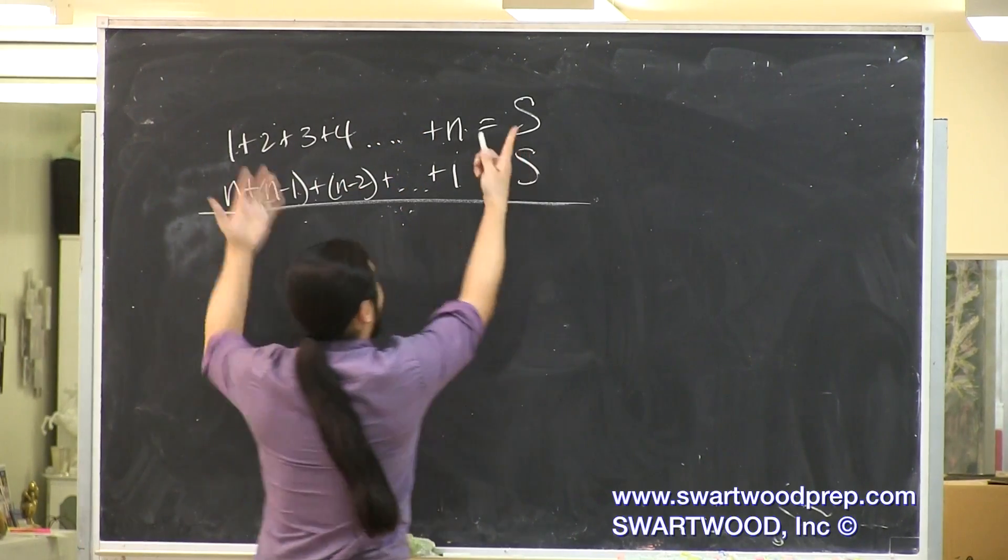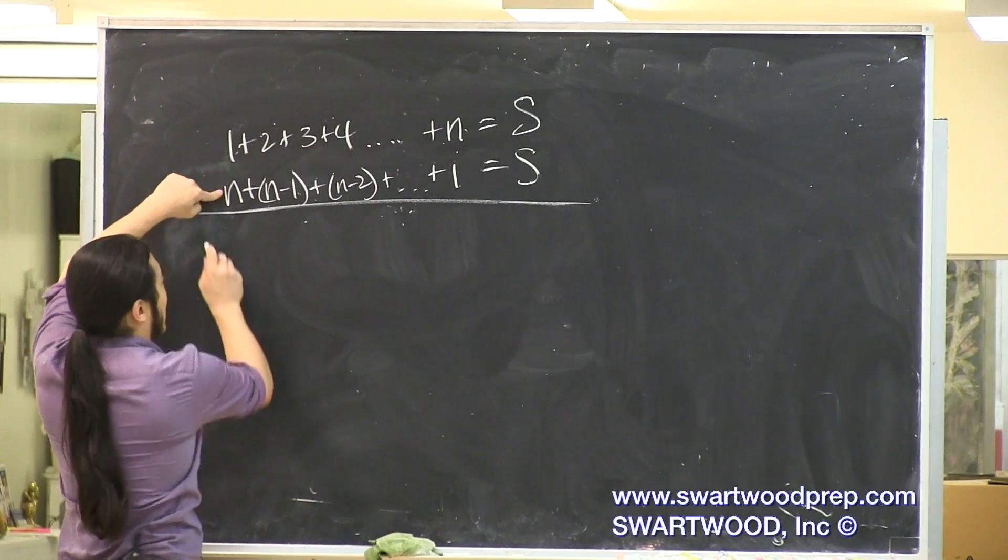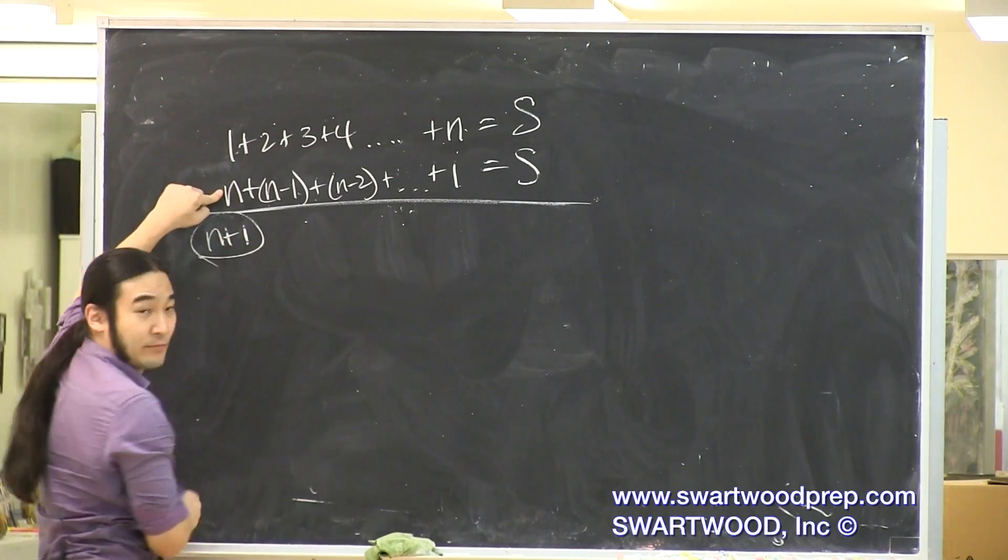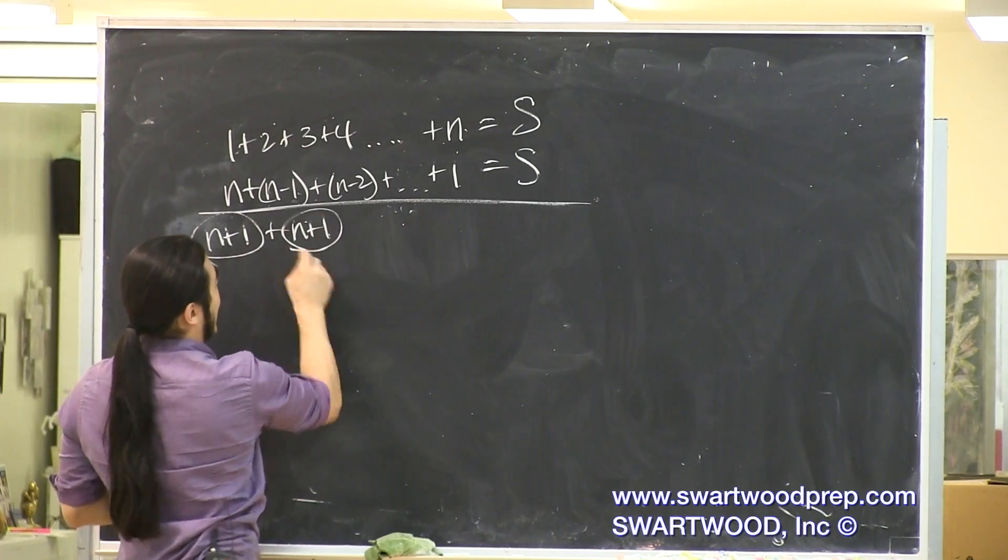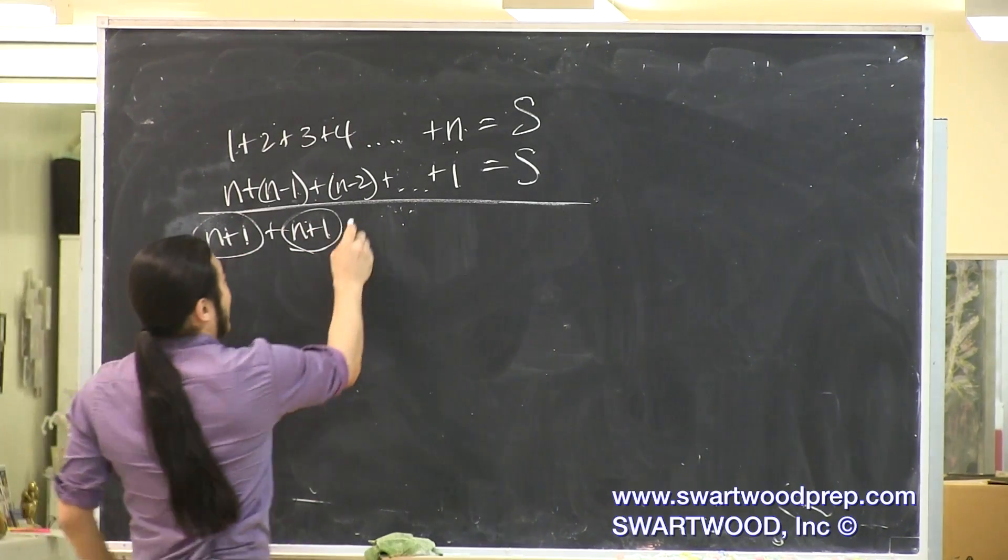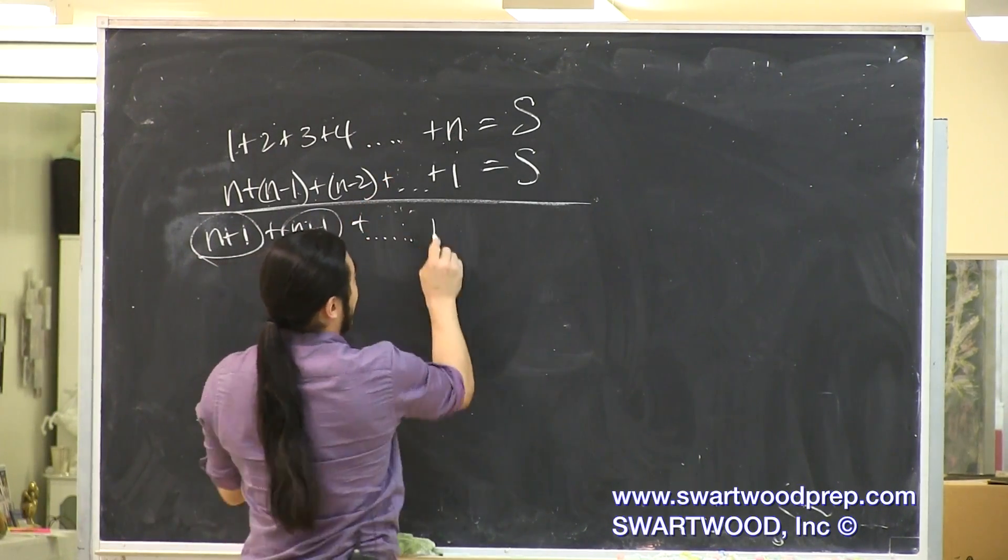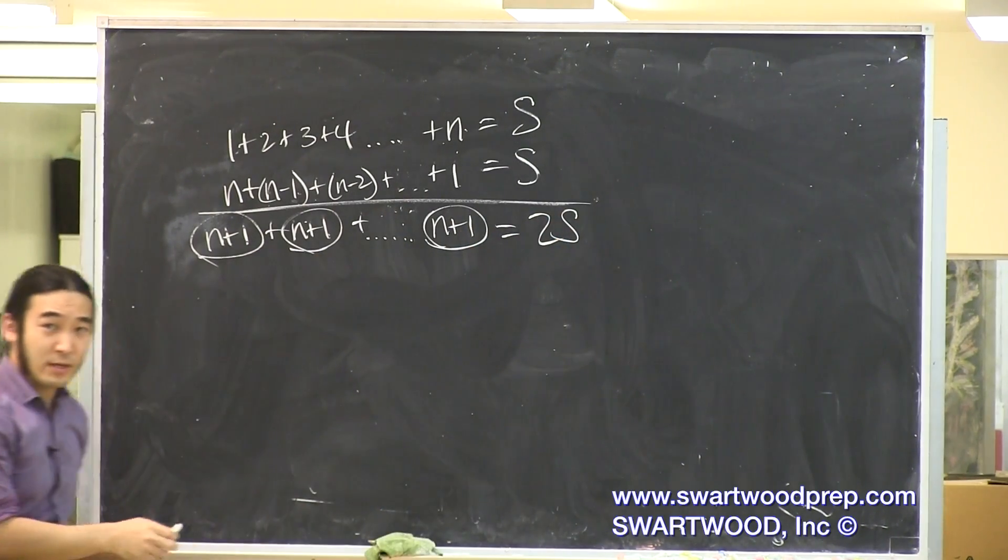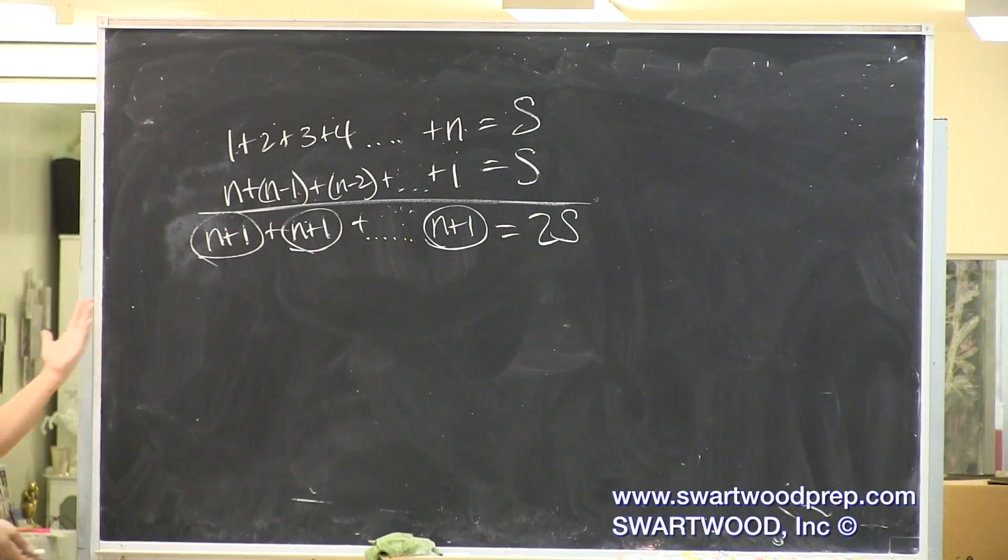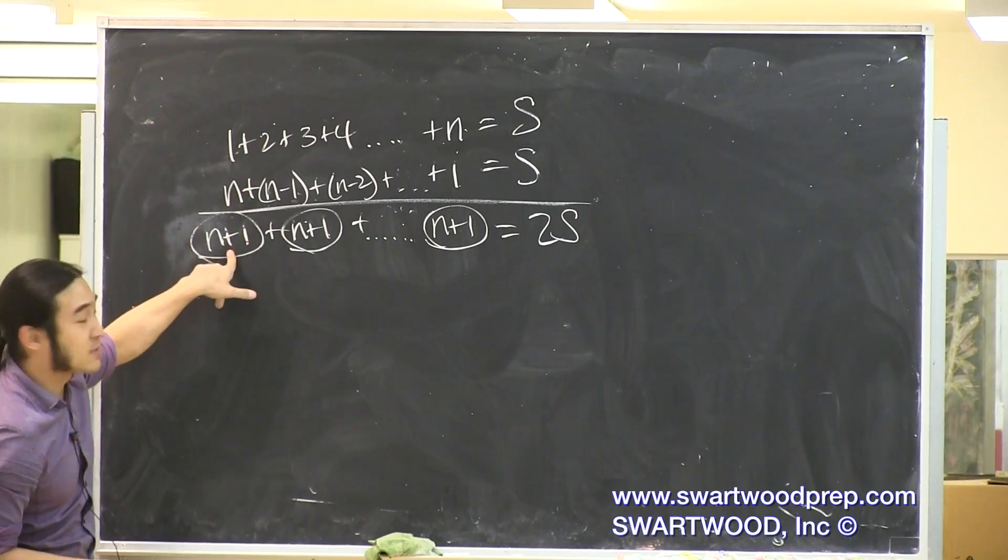The nice thing about this, though, is if you add the two of them, n plus 1 is n plus 1. And you can see this term, 2 plus n minus 1, well, it's still n plus 1. I mean, this is basically what he did. And then you look across, at the end, it's still n plus 1. And that's twice your sum. Everybody agree? So now the only thing left is: each guy adds up to n plus 1.